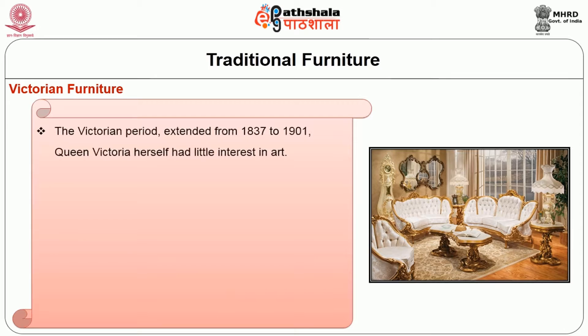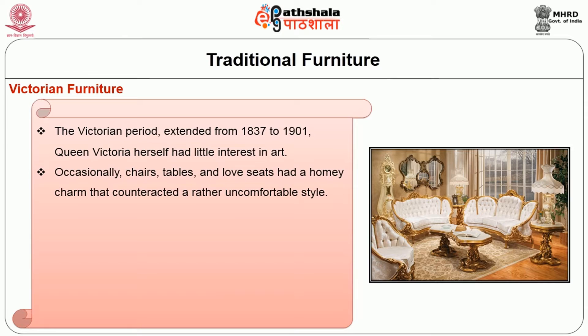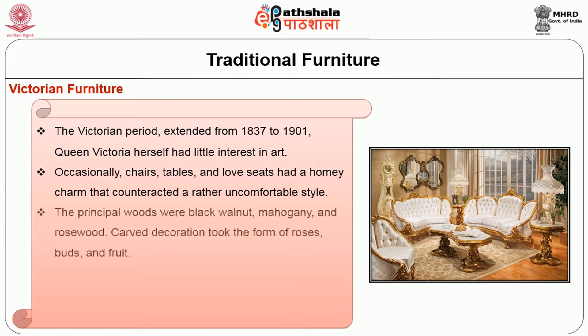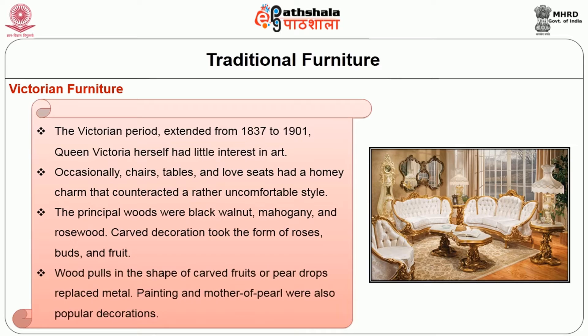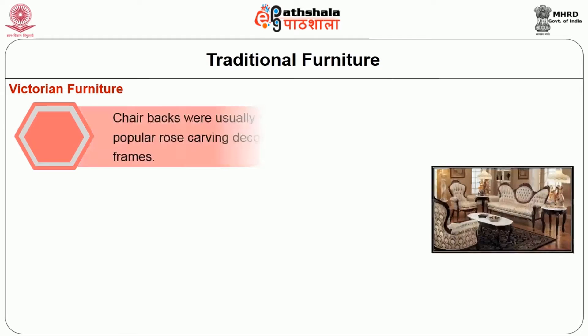Victorian Furniture: The Victorian period extended from 1837 to 1901. Queen Victoria herself had little interest in art. Occasionally chairs, tables, and love seats had a homey charm that counteracted a rather uncomfortable style. The principal woods were black walnut, mahogany, and rosewood. Carved decoration took the form of roses, buds, and fruit. Wood pulls in the shape of carved fruits or peardrops replaced metal. Painting and mother of pearl were also popular decorations.